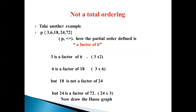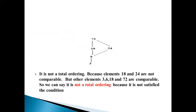Not a total ordering. Take another example. Given the set P equal to {3, 6, 18, 24, 72}. The partial order defined is 'A is a factor of B'. So take 3 and 6: 3 is a factor of 6. 6 is a factor of 18. But 18 is not a factor of 24. And 18 is a factor of 72, so draw the Hasse graph. It is not a total ordering because elements 18 and 24 are not comparable. Other elements 3, 6, 18, and 72 are comparable, so it is not a total ordering as it does not satisfy the condition.